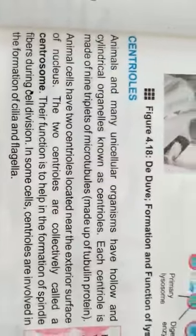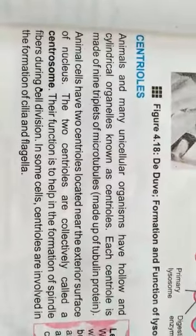Animal cells have 2 centrioles located near the exterior surface of the nucleus. But because these are not in the nucleus...